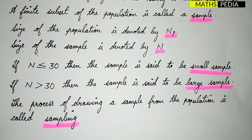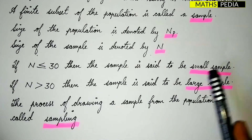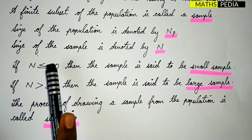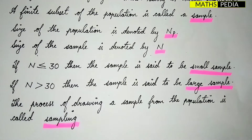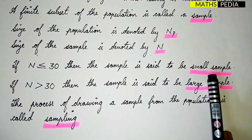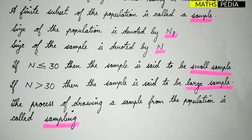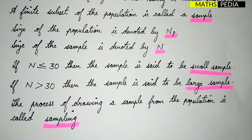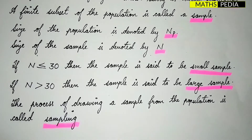There are two types of samples we can consider: small sample and large sample. Whenever the sample size n is less than or equal to 30, the sample is said to be a small sample. Whenever the sample size n is greater than 30, the sample is said to be a large sample.